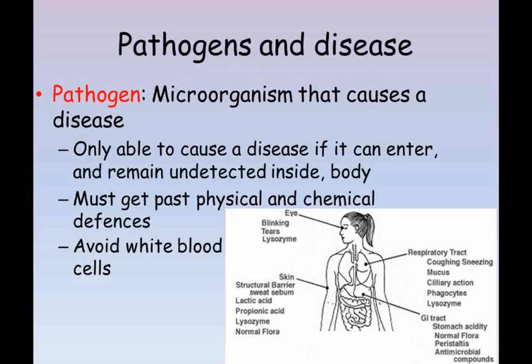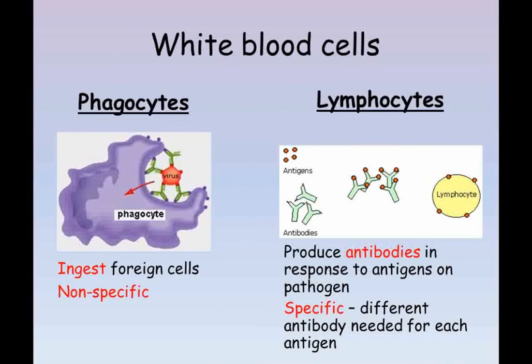The human immune system has two main types of white blood cell. The first type are called phagocytes. They respond to all foreign cells in the same way, so we describe them as non-specific. Phagocytes ingest and then kill, using enzymes, cells that they recognize as foreign. However, they do not recognize all potential pathogens.